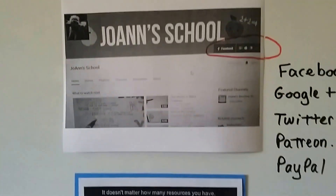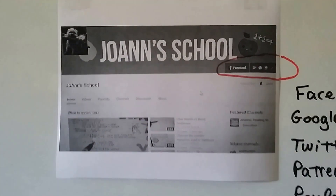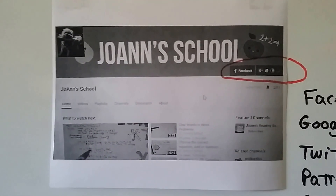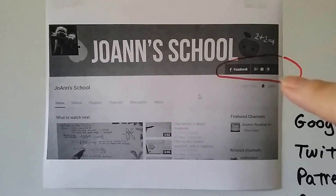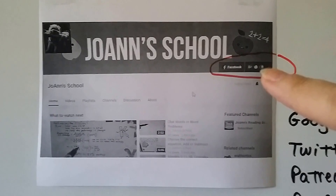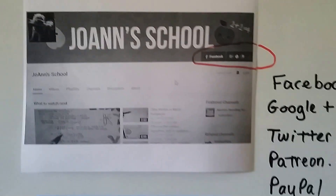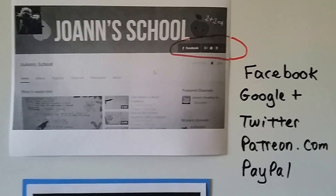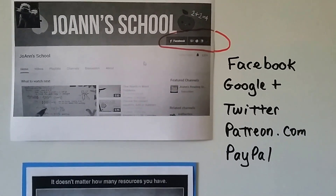You can go to the Joanne School homepage, and in this corner you'll see all these links: Facebook, Google+, Twitter, Patreon.com, and PayPal.